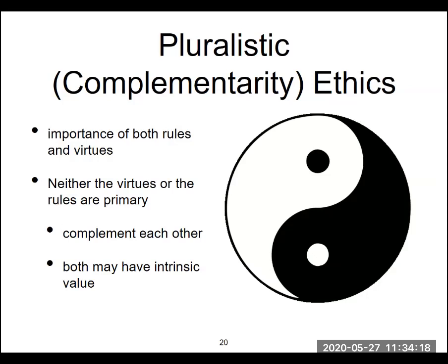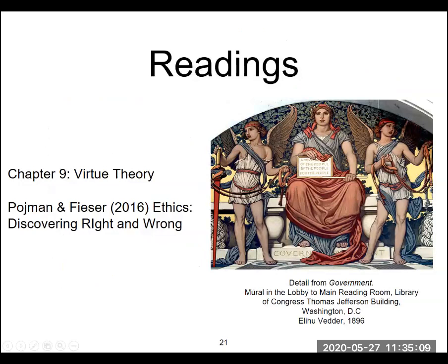A middle-of-the-road extension of virtue ethics is pluralistic ethics, often referred to as complementarity ethics. This approach recognizes an interplay between the rules of religion or society and virtues. In pluralistic ethics, we need to be mindful and respectful of both virtues and rules, but neither supersedes the other — they complement one another because both have intrinsic values. This brings back the core concept of virtue ethics: doing the right thing for the right reason.